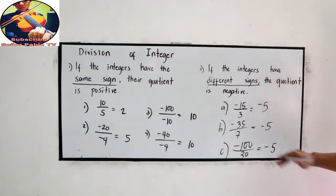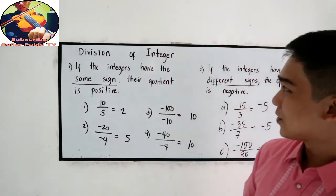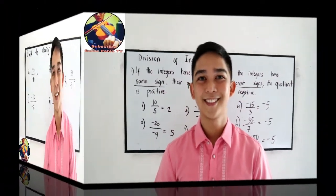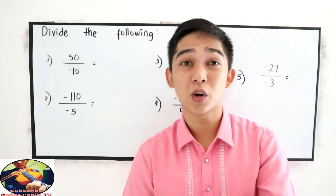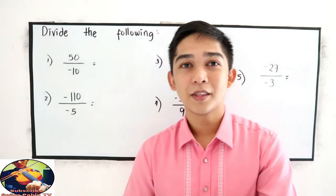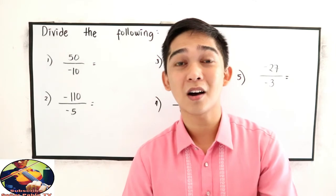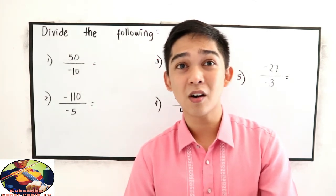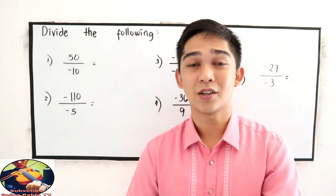So that is negative 5. So those are our simple rules. This video will be the exercises for the division of integers. Let's have a brief recall about our rules for division.